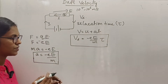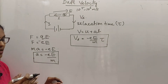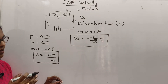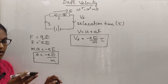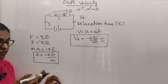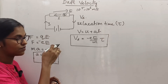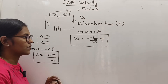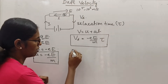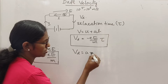The average velocity of electrons under the influence of electric field is known as the drift velocity. That means the average velocity of the electrons drifted towards the positive end of the conductor under the influence of an electric field. That velocity is known as the drift velocity. Vd is equal to acceleration into tau.